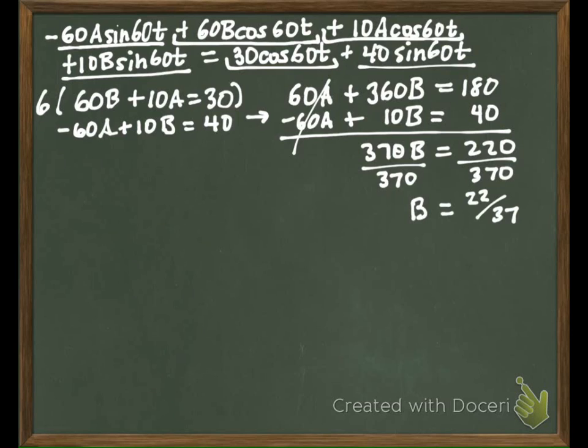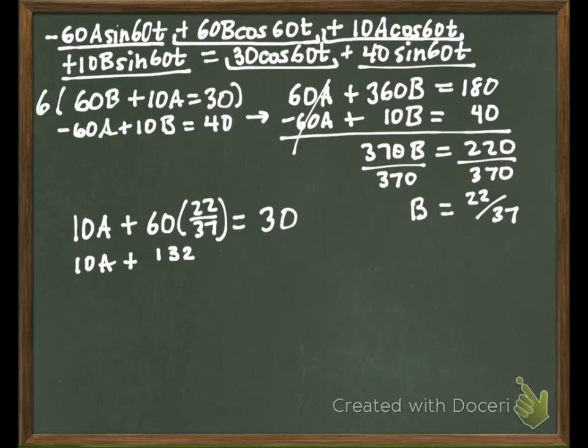And then to get A, we can go back and say 10A plus 60 times 22 over 37 is equal to 30. So let's go ahead and change 30 so that it has a denominator of 37 as well. That way we'll be able to combine.